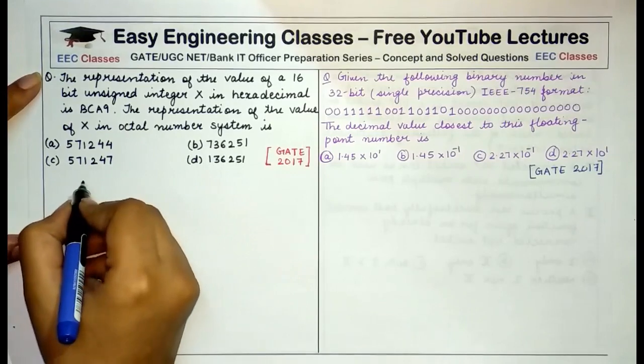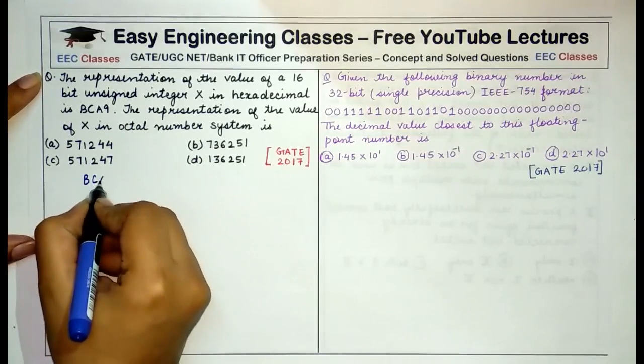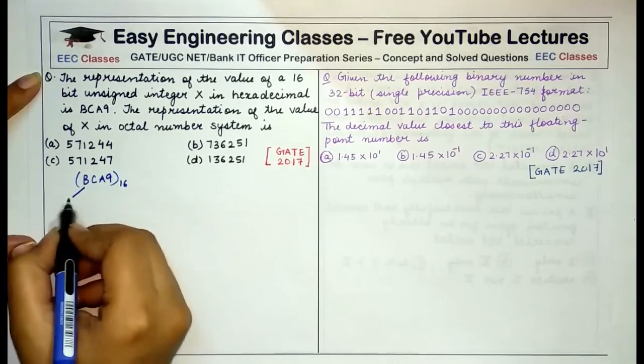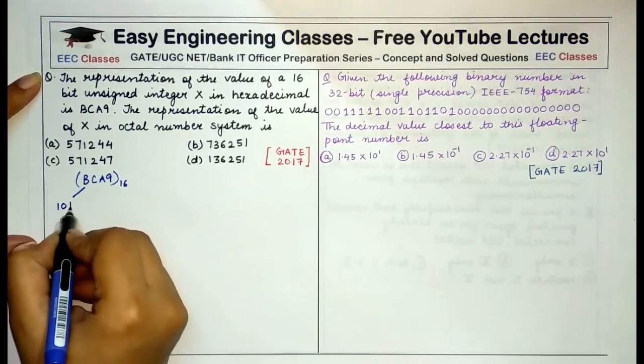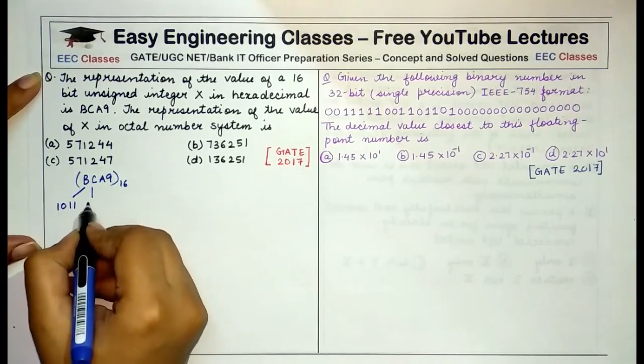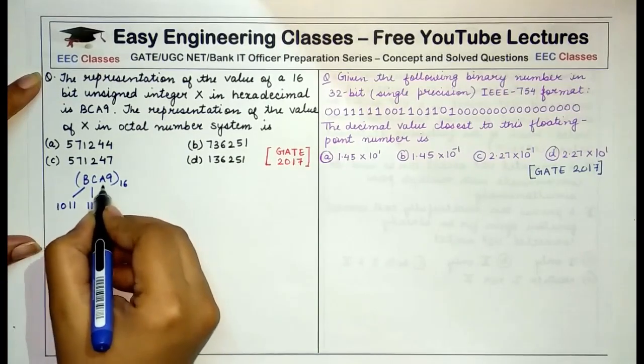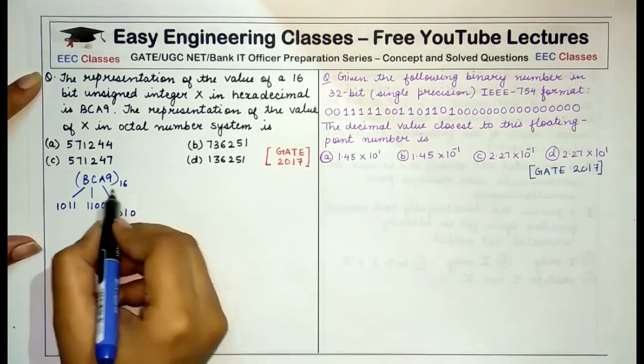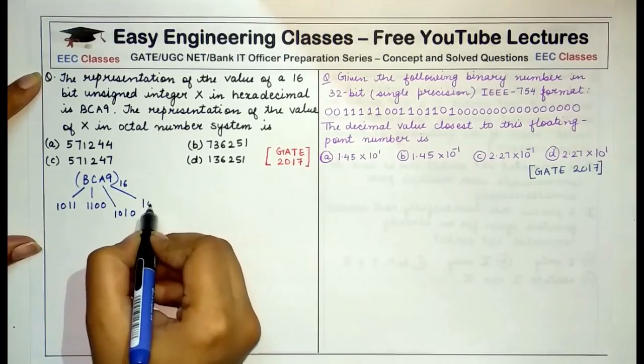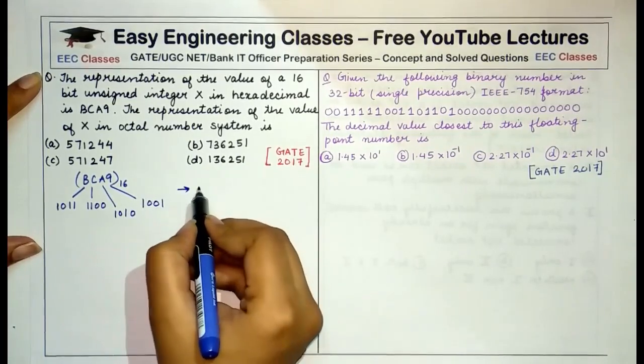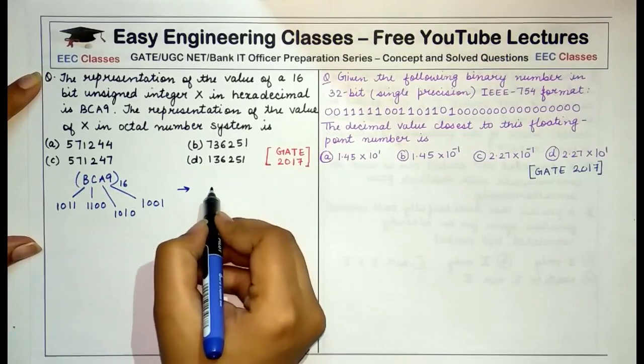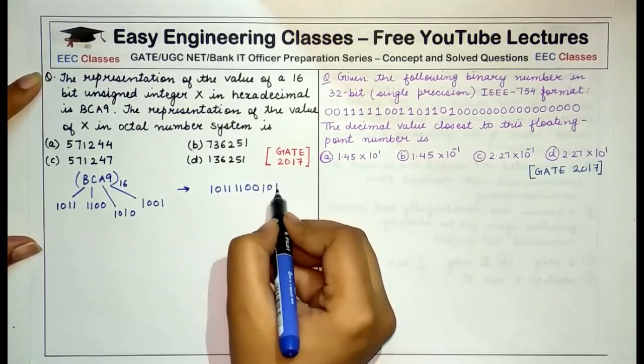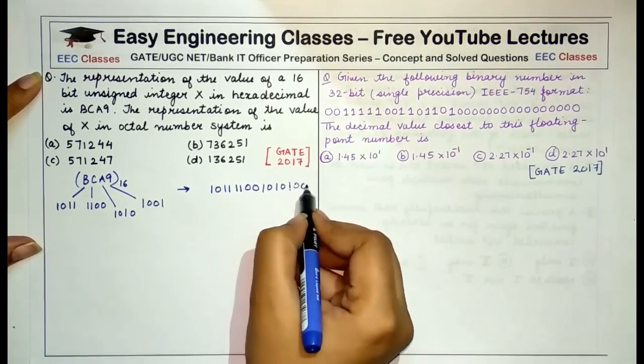So this is a very easy question. If you expand this hexadecimal notation in binary you'll find that B can be written as 1011, C can be written as 1100, A can be written as 1010, and 9 can be written as 1001. So together this can be represented as 1011 1100 1010 1001.